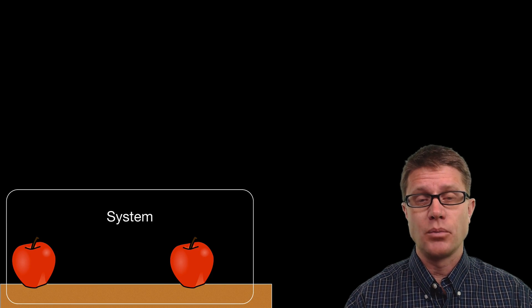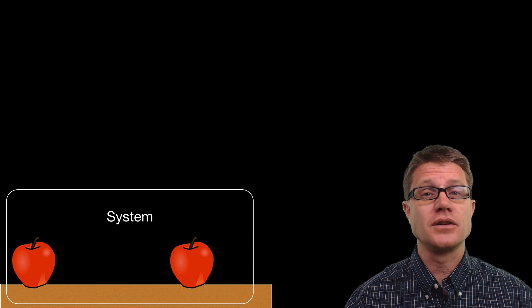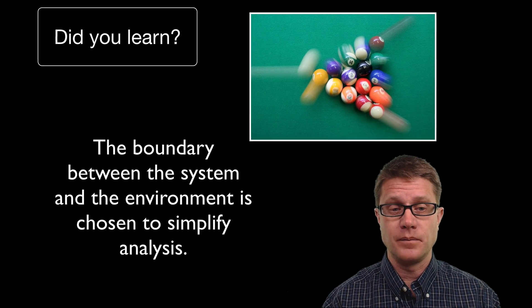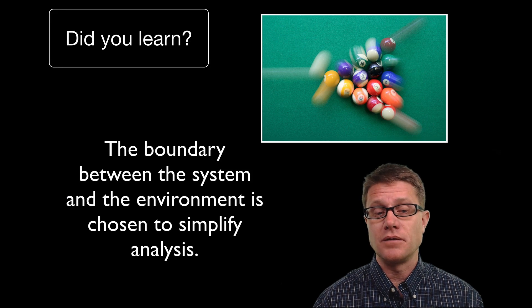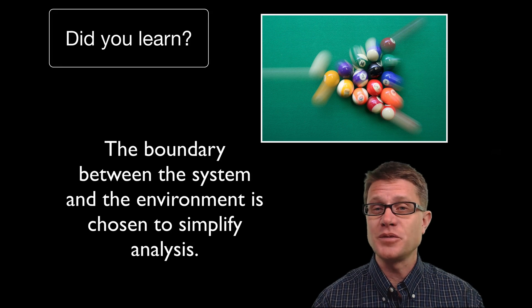Let's actually do a physics problem. If I have one apple sliding across a counter and colliding with another apple, we are transferring momentum from one apple to another. Where would you draw the system? What are you going to include to make it easier to solve this problem? I would include both apples because they are clearly part of this collision. Would you include the table they are on? I would, because there are clearly frictional forces going on. You may also want to include the air because there may be some air resistance as well, but we are not going to include anything outside of that. The boundary between the system and the environment is chosen by the person solving the problem simply to simplify analysis of that problem.